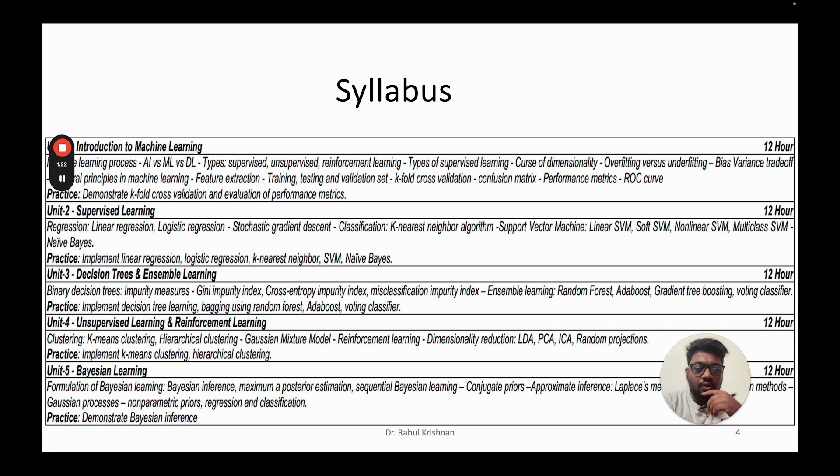Then further, we get into decision trees. In the third module, we will learn binary decision trees, then different impurity measures, then get into ensemble learning, the most used algorithms called random forest algorithm. These are the overview of the third module.